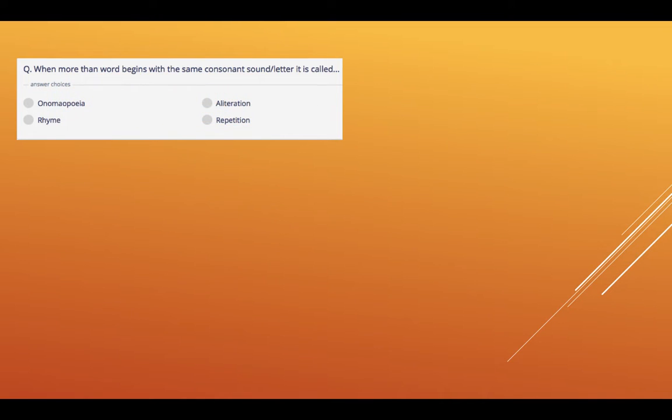Let's look at number seven. When more than one word begins with the same consonant sound or letter, it is called onomatopoeia, alliteration, rhyme or repetition.